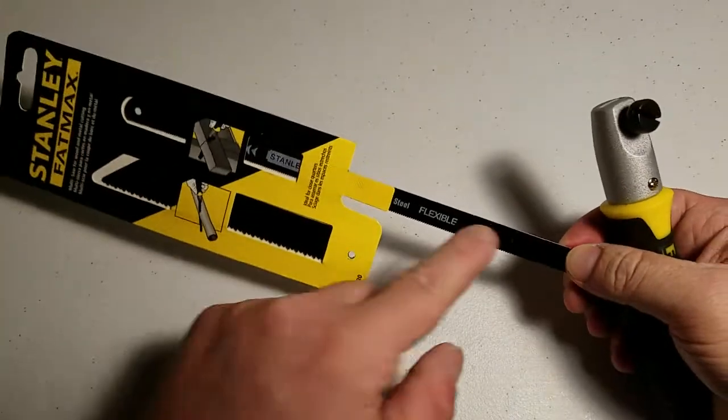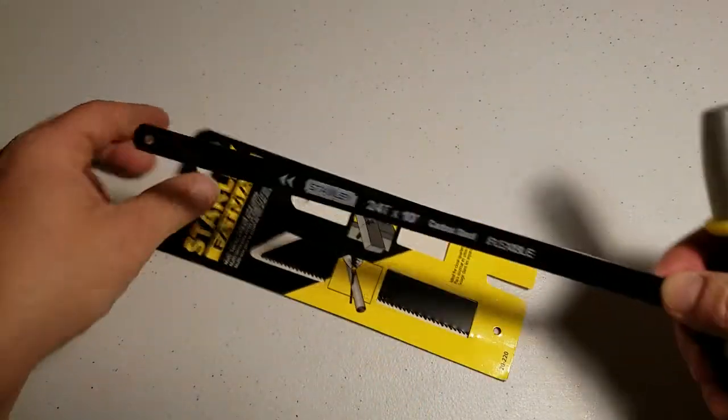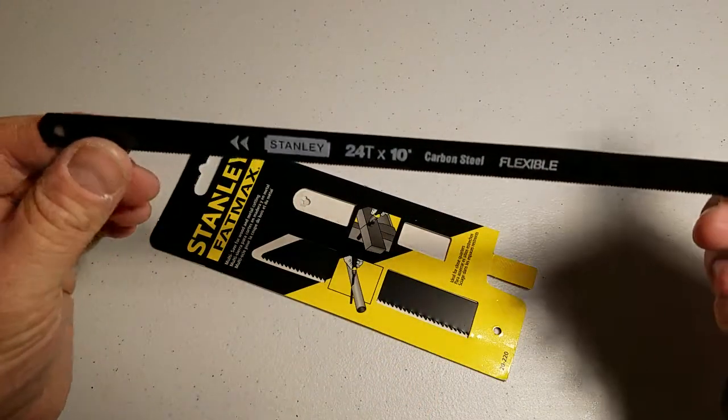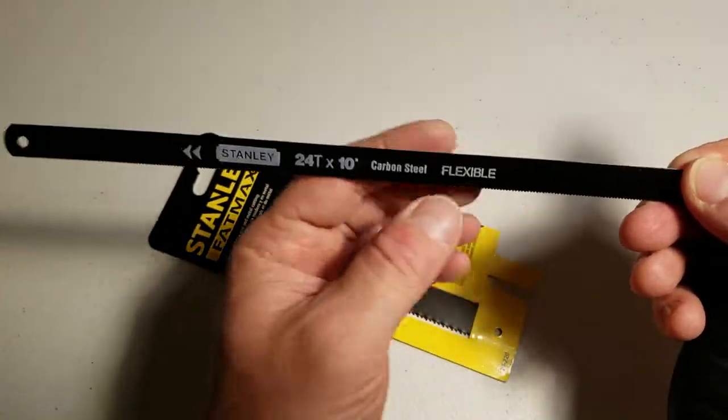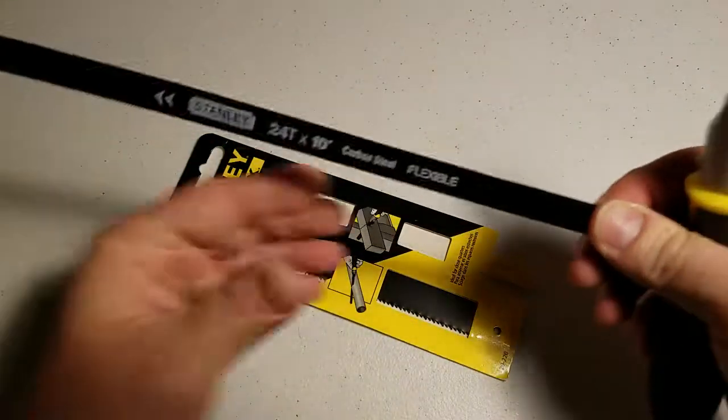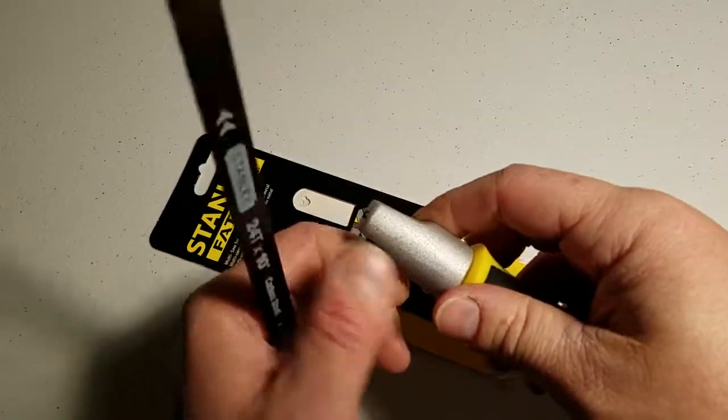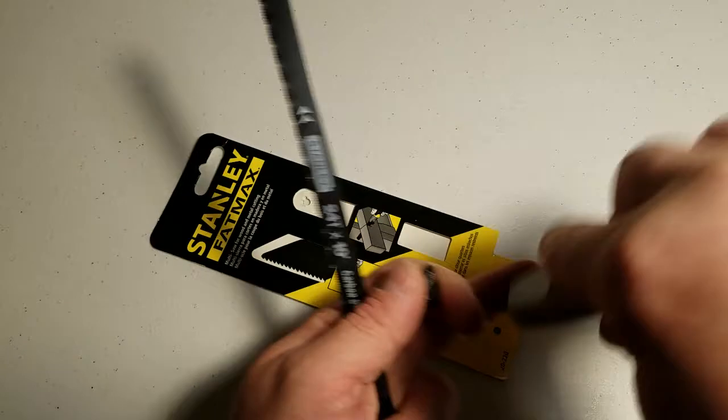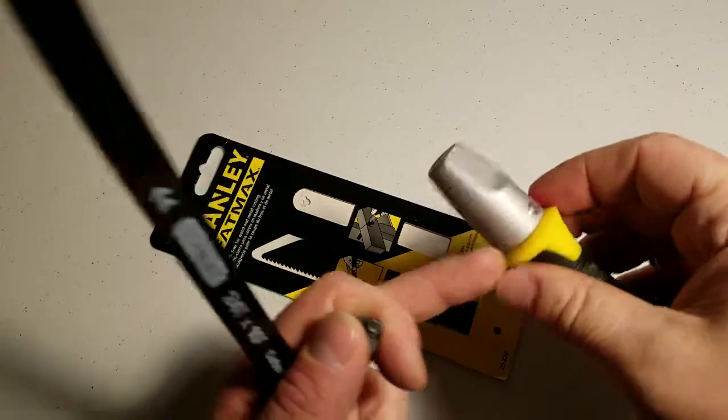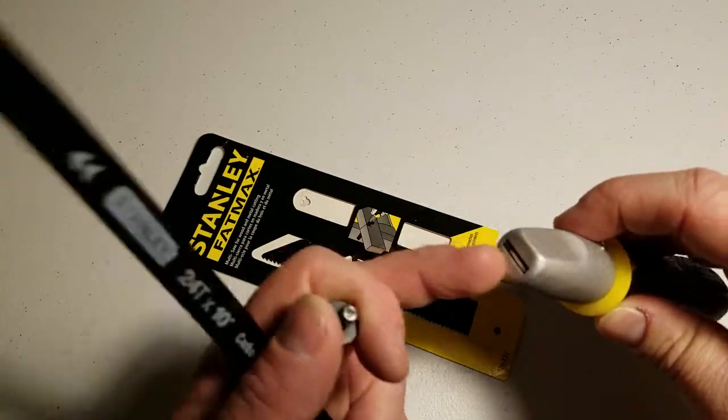It'll take any hacksaw blade, so this is Stanley 24T by 10 inch carbon steel, flexible. It takes any hacksaw blade, and this is just a tightener nut. If I take the nut out on the side here, nothing falls out. It's actually got a screw on both sides holding a plate on the inside.